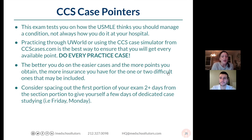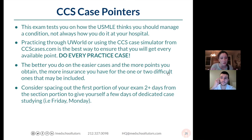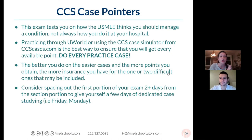There are usually 12 cases total, and usually one or two are slightly harder than the others. A lot of them will be like our first case — right off the bat you're thinking, 'okay, this is probably appendicitis, maybe ovarian torsion, but probably appendicitis.' Those are pretty straightforward and easy, and those are the ones where you should really take the time to make sure you get everything right.